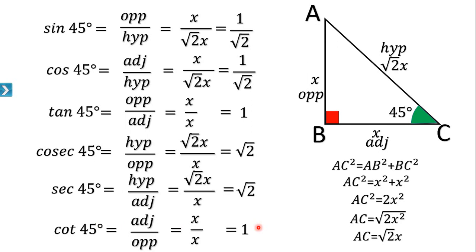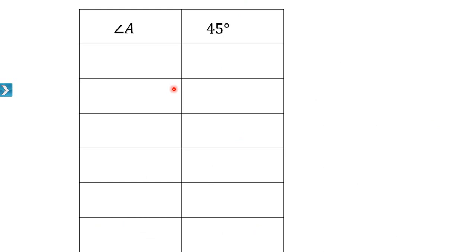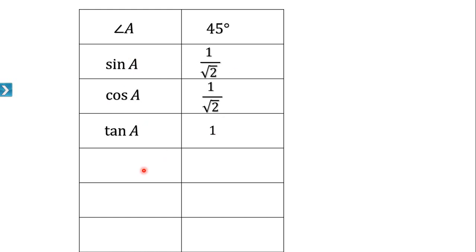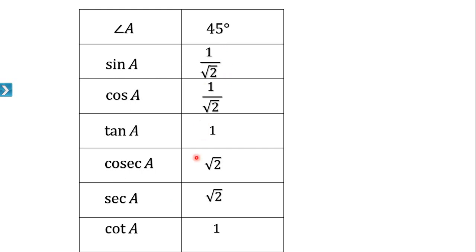These are the values of trigonometric ratios for angle 45 degrees. To summarize: if angle A is 45 degrees, then sin 45° = 1/√2, cos 45° = 1/√2, tan 45° = 1. These three you must remember. The reciprocals give cosec 45° = √2, sec 45° = √2, and cot 45° = 1.